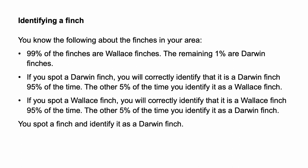The following example provides another illustration of the use of Bayes' rule and natural frequencies. You are trying to spot a rare type of bird, the Darwin finch. It looks very similar to the Wallace finch, except for a slight difference in the shape of its beak. You know the following: 99% of the finches are Wallace finches, the remaining 1% are Darwin finches. If you spot a Darwin finch, you will correctly identify it as a Darwin finch 95% of the time; the other 5% of the time you identify it as a Wallace finch. If you spot a Wallace finch, you will correctly identify it as a Wallace finch 95% of the time; the other 5% of the time you identify it as a Darwin finch. You spot a finch and identify it as a Darwin finch. What is the probability that the finch is a Darwin finch?